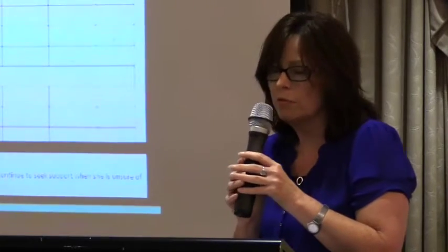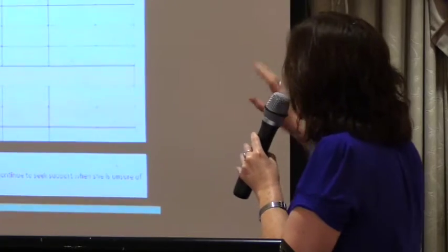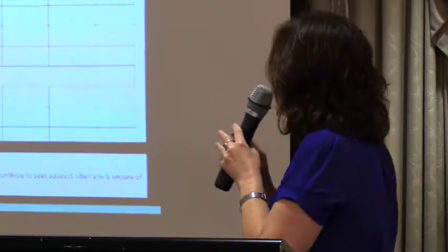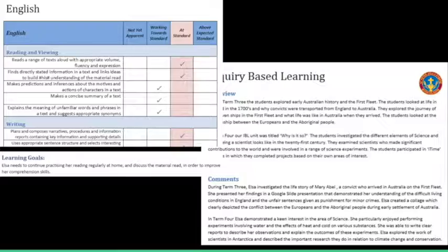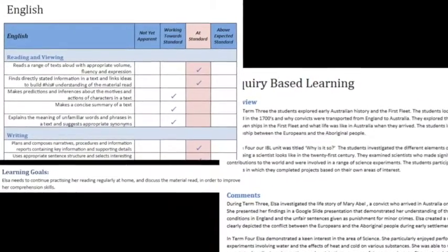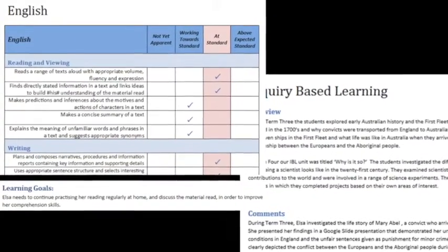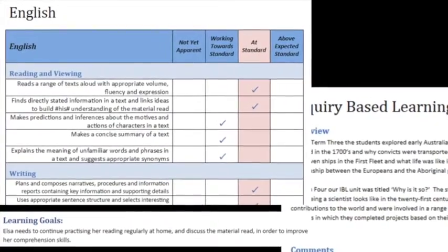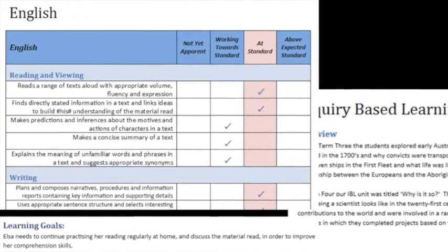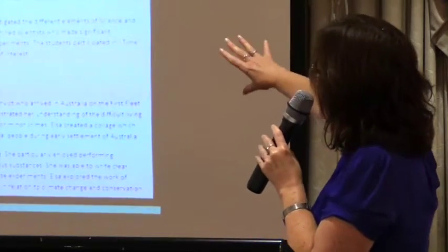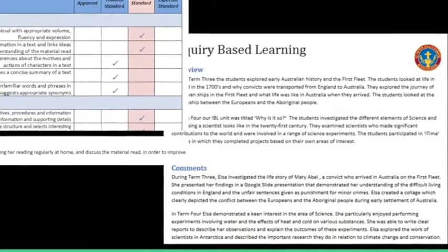While we have the five-point scale in the achievement summary table, we went with a four-point scale in the rest of the report. At the bottom of that table was the option for learning goals for children who needed it in the personal and social area. The English page had: Not Yet Apparent, Working Towards Standard, At Standard, and Above Expected Standard — covering Reading and Viewing, Writing, and Speaking and Listening, with an opportunity for learning goals. The same applied for maths. The IBL section had an overview and a comments section.